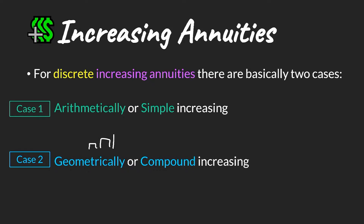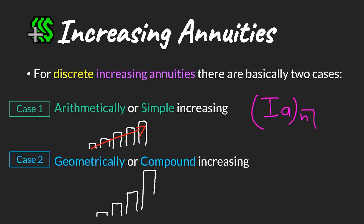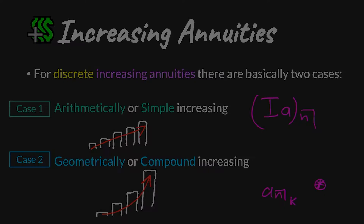For discrete increasing annuities we have two cases. The first is where we have arithmetically or simple increase in cash flows, where the cash flows increase by the same amount each period, and we have actuarial notation for this. For case two, where cash flows increase by a factor — geometrically or compound increasing — we don't necessarily have a unique actuarial notation, but we make use of existing notation to work this out.